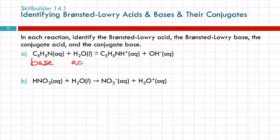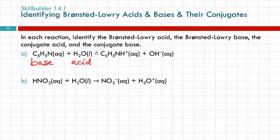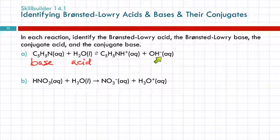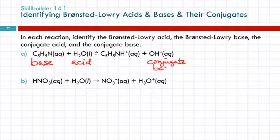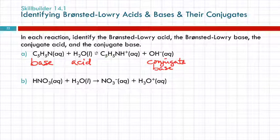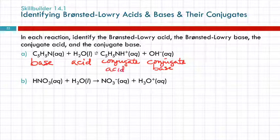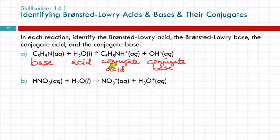So in that example, water is the acid and OH⁻ is its conjugate base. The other reactant accepted the hydrogen ion and is the base; after accepting the proton it becomes the conjugate acid. The conjugate acid now carries an extra hydrogen ion and a positive charge, which means it could potentially act as an acid and donate that proton to something else.